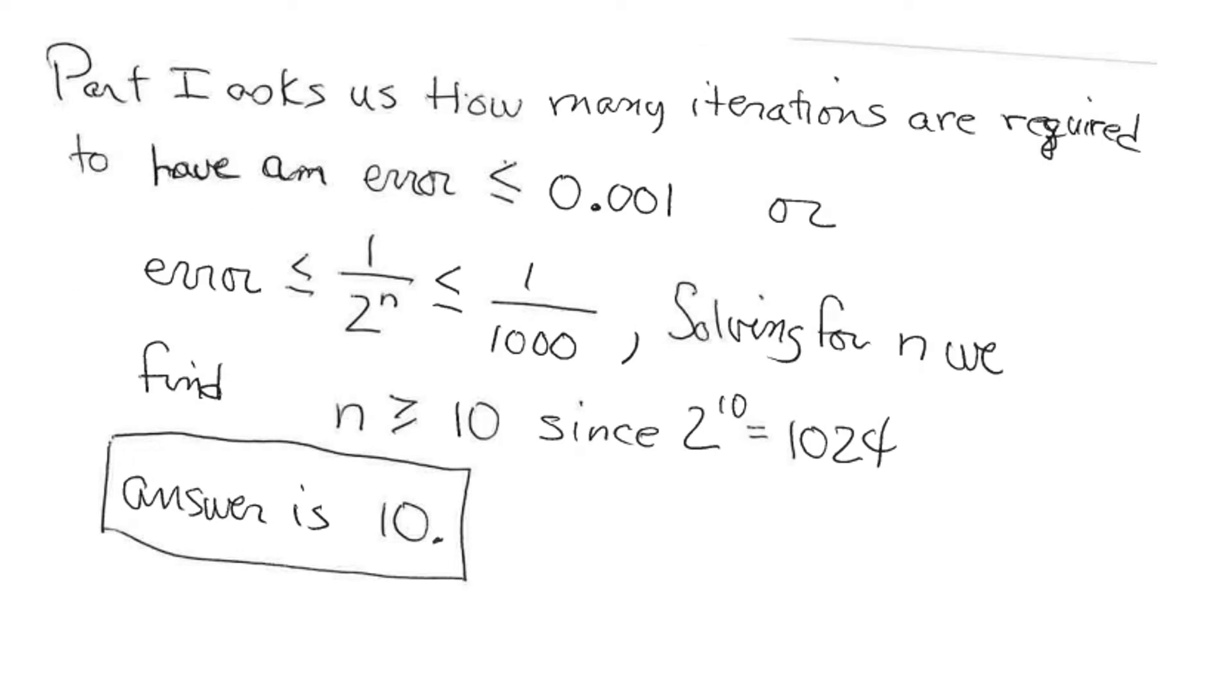Now, Part 1 asks us how many iterations are required to have an error of less than 0.001. And so that means we have to have 1/2^n ≤ 1/1000. And you can solve this for n, and you see that n has to be greater than or equal to 10, because 2^10 = 1024. So the answer is you need 10 iterations.